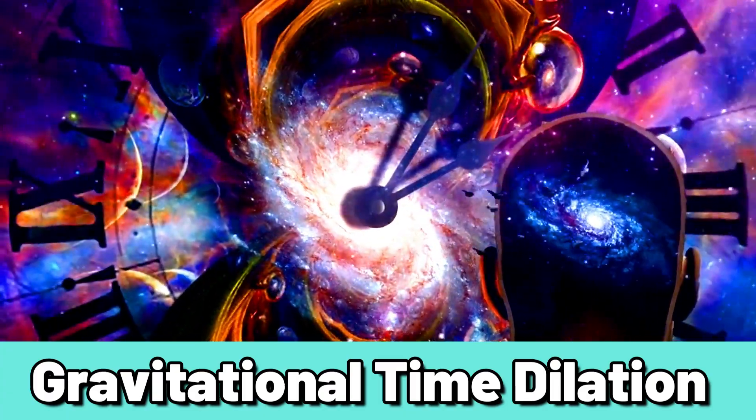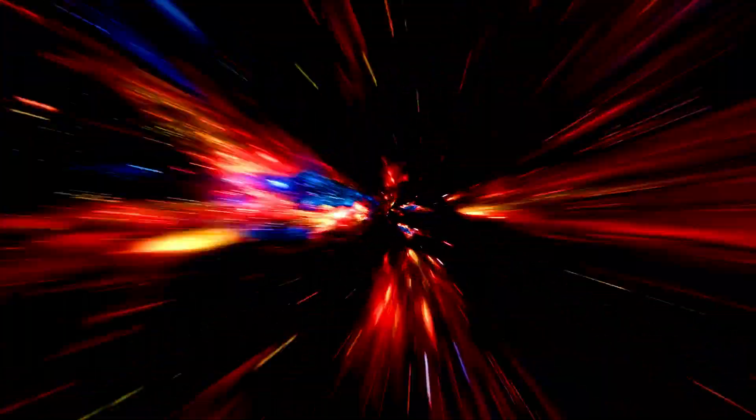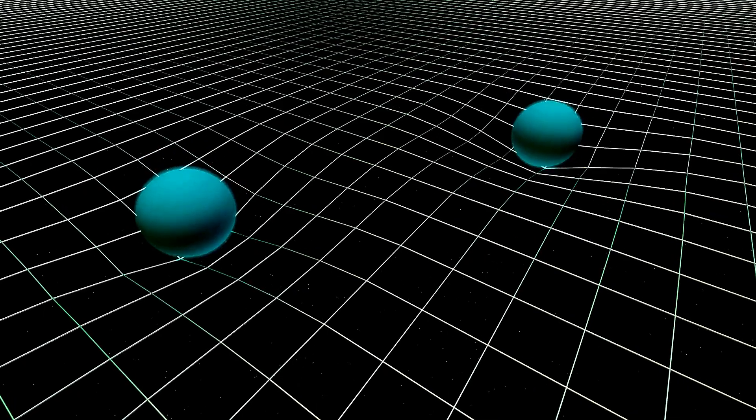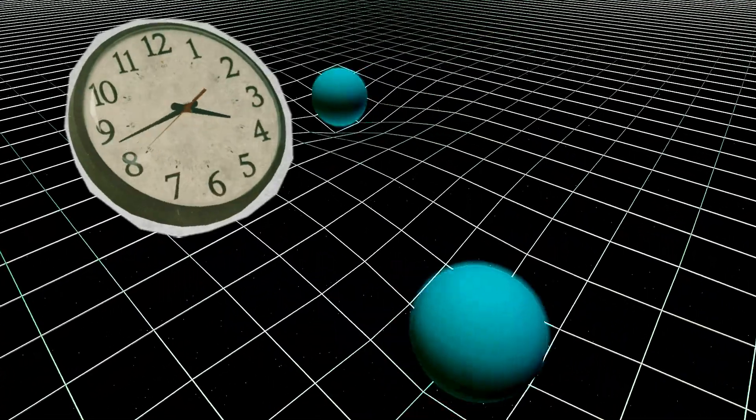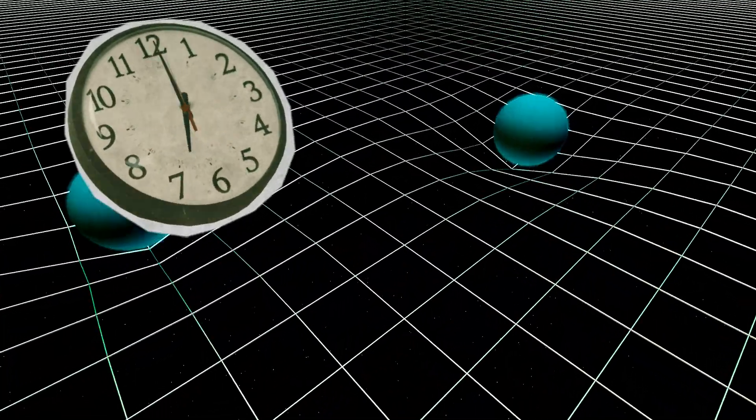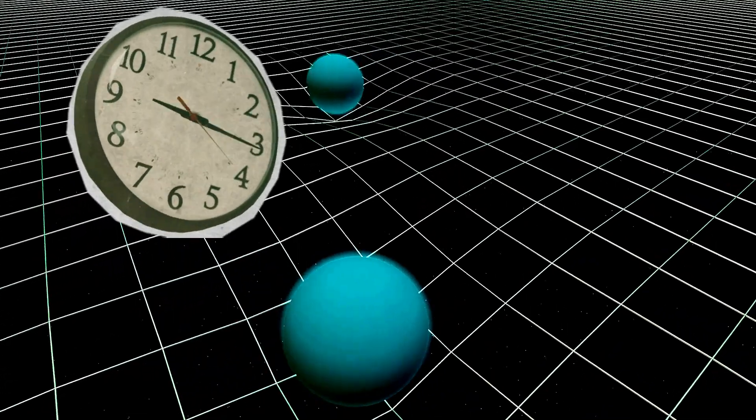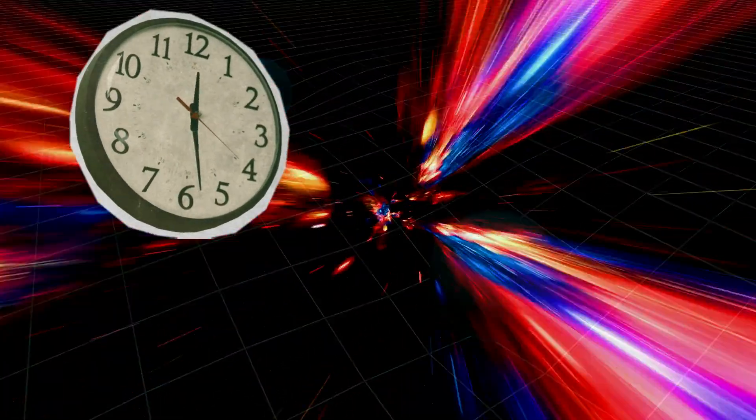Time dilation allows for the possibility of time travel into the future. If an object is moving at high speeds or is in a strong gravitational field, time will pass more slowly for that object than for a stationary observer. As a result, the object will experience less time than the observer and will effectively travel into the future.